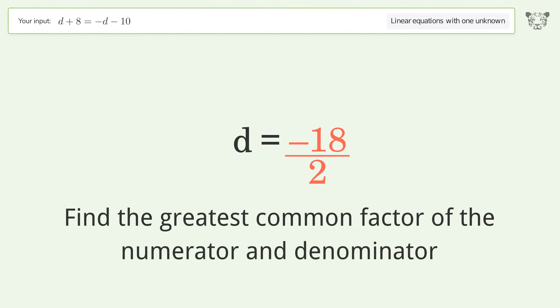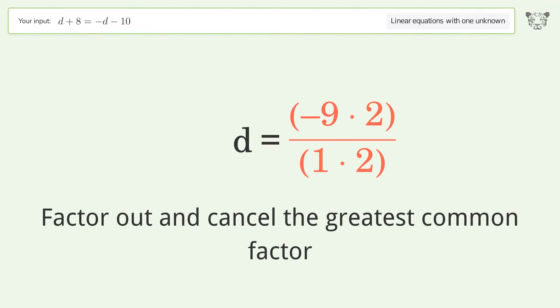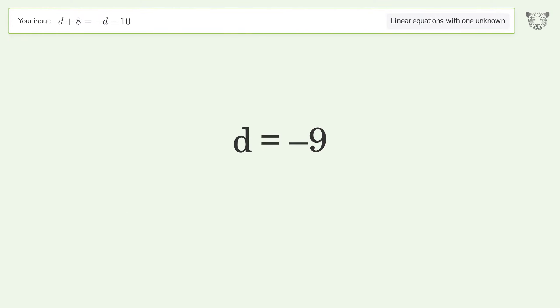Find the greatest common factor of the numerator and denominator. Factor out and cancel the greatest common factor. And so the final result is d equals negative 9.